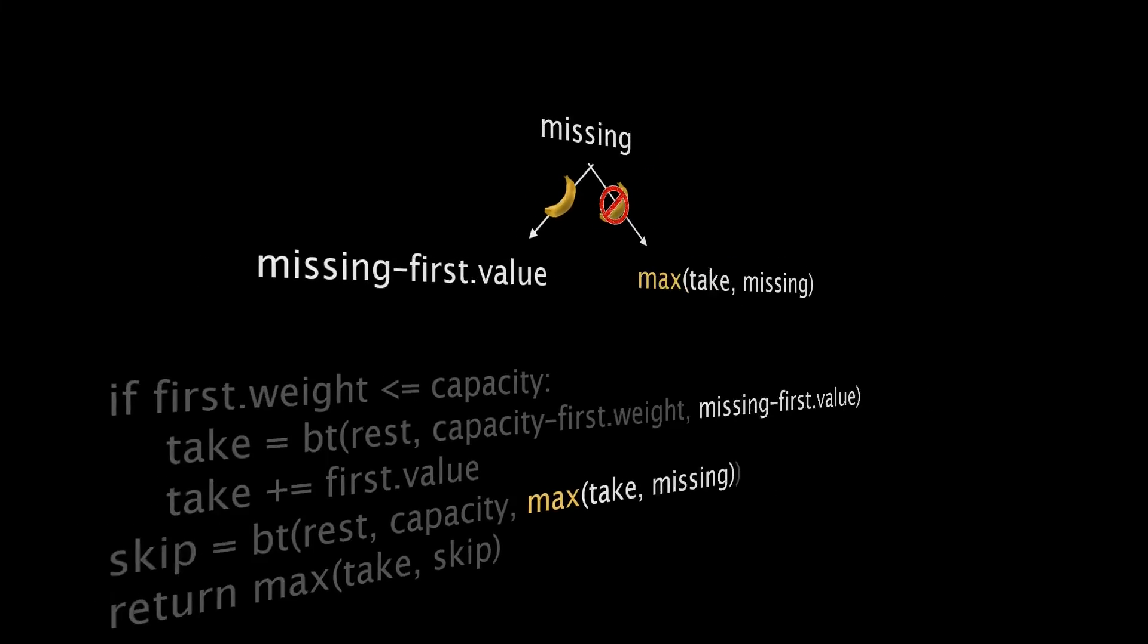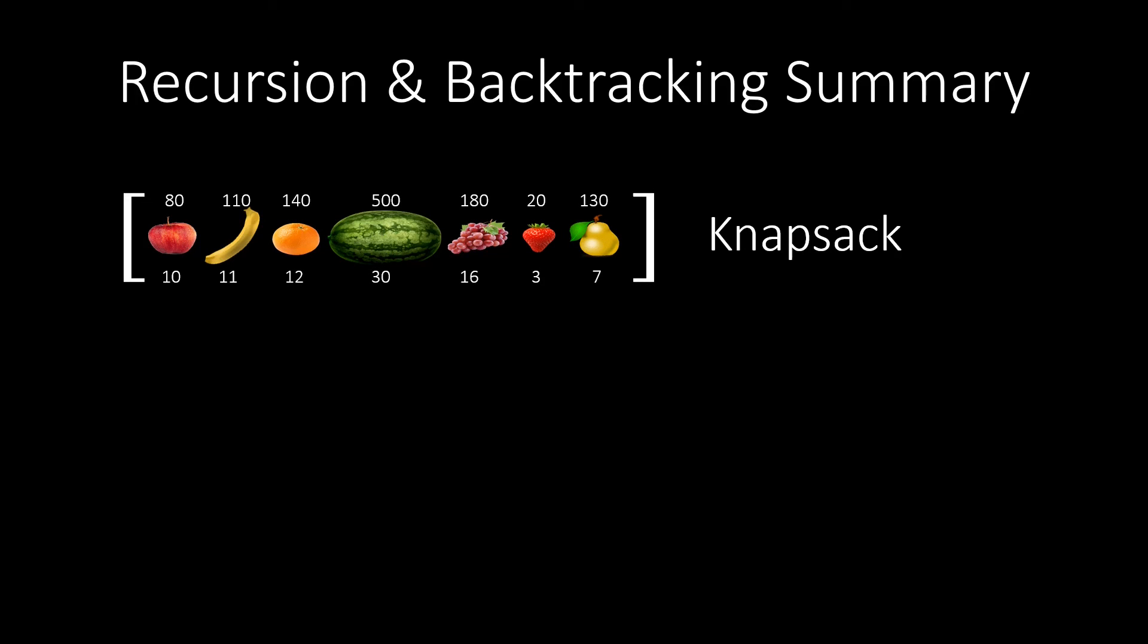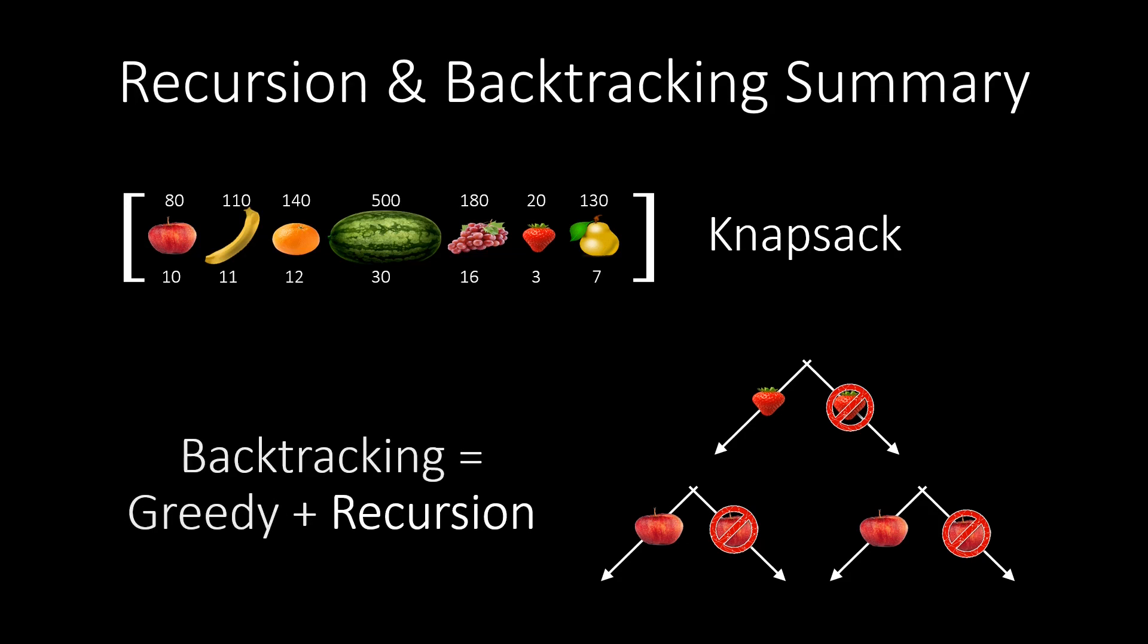Let us summarize the main insights of this video. We have first introduced the knapsack problem, which served as an example for the whole video. Then we showed how to systematically construct all possible solutions using recursion. Finally, we showed how to do recursion in a smart way by constructing promising solutions first. Thanks to this, we can often prune the recursion early because we know that a certain subtree doesn't have to be evaluated anymore since it cannot achieve a better solution than the current best candidate. Essentially, backtracking combines the greedy approach with the recursive approach. Thanks for watching this video.